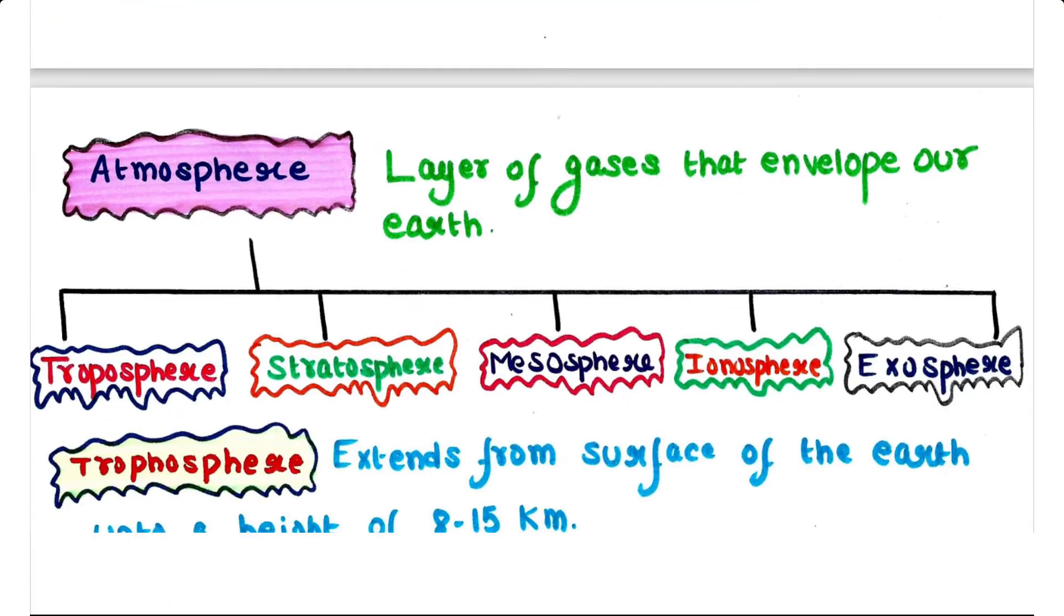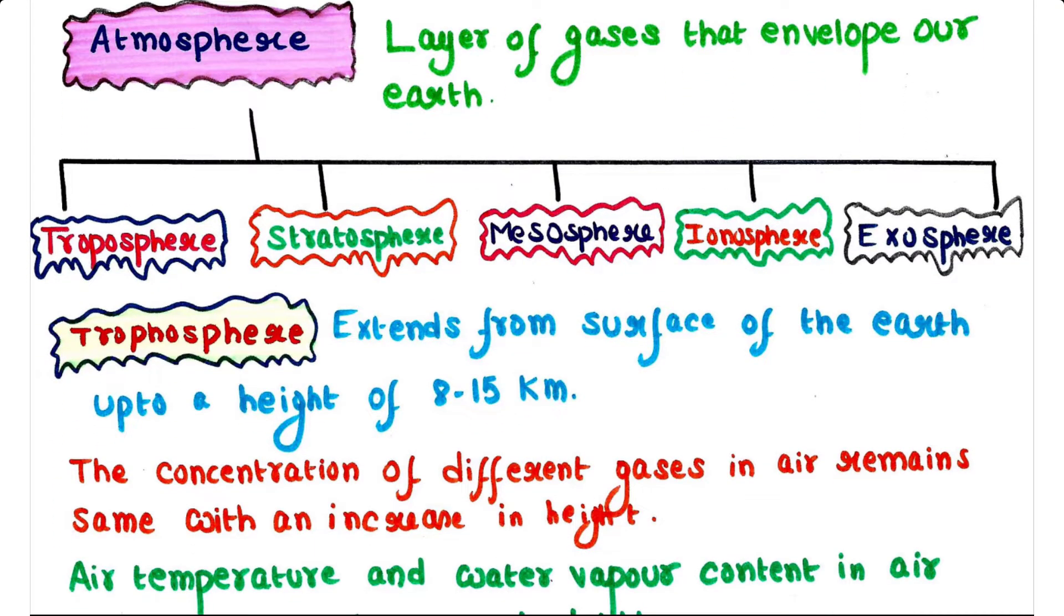First is atmosphere. An atmosphere is a layer of gases that envelop our earth, and the atmosphere is again divided into five layers such as troposphere, stratosphere, mesosphere, ionosphere, and exosphere.